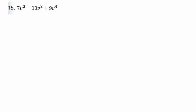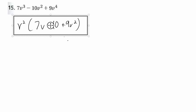For number 15, 7 is a prime number, so unless all these are divisible by 7, you can't factor a number out. So you'll only be able to pull a variable out. Pull out the two V's — you get 7V, 10, and 9V squared inside the parentheses. This is the answer — factored.